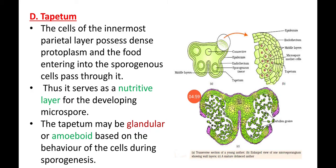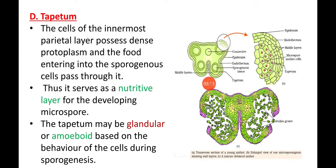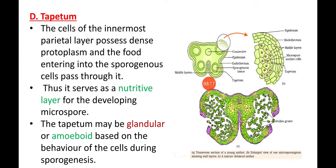The next layer is the tapetum. The cells of the innermost parietal layer possess dense cytoplasm. Tapetum is the innermost layer of the anther wall and it is a nutritive tissue — it provides food to the developing microspores and microsporangium.